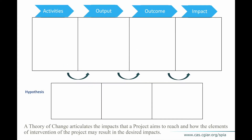How does a theory of change look? First, a theory of change has the goal of defining the impact that the project wants to reach, and then thinking of how the various elements of the project — the interventions the project includes — can result in these impacts. This typically looks like a table where you have the various stages from the initial activities all the way to the impact of the project. That's one typical representation; you can have more complex representations, but that's the idea.